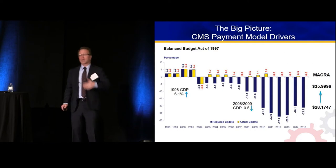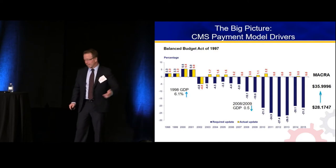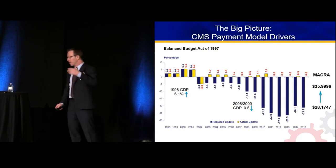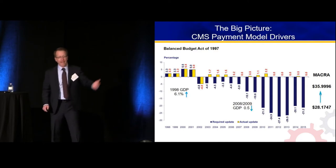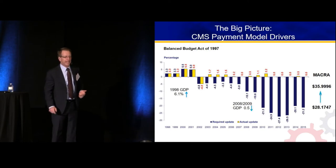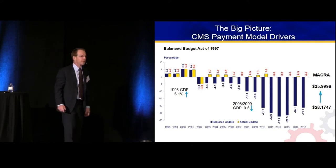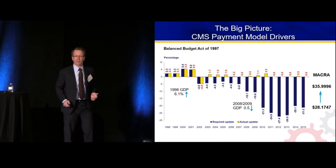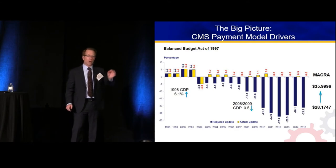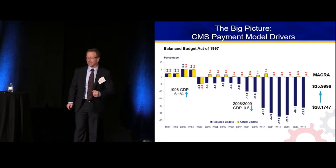So those of us who were involved in advocacy were going along with ASEP members, EDPMA members, ED Directors Academy members, and the House of Medicine and the AMA up to Capitol Hill every year, pleading to not have this 20–25% cut. We had 17 pleadings that took place.